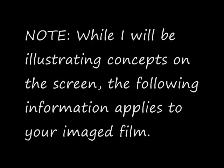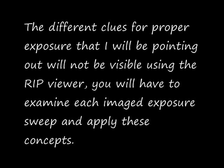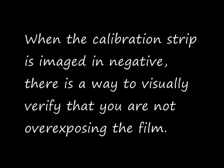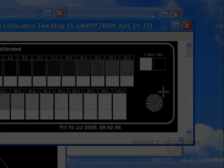The next step is to image and examine your exposure sweeps. While I will be illustrating concepts on the screen, the following information applies to your imaged film. The different clues for proper exposure that I will be pointing out will not be visible using the RIP viewer. You will have to examine each imaged exposure sweep and apply these concepts. When the calibration strip is imaged in negative, there is a way to visually verify that you are not overexposing the film — that's why I like to work in negative.